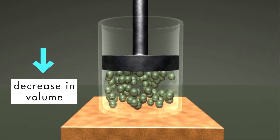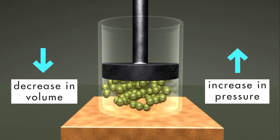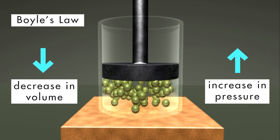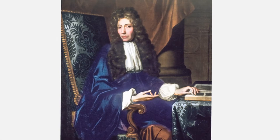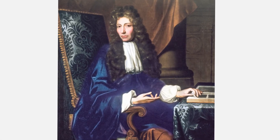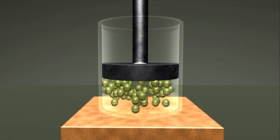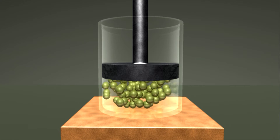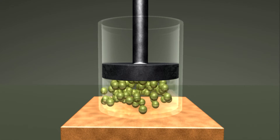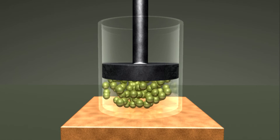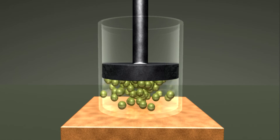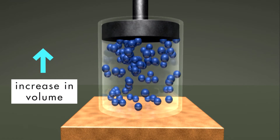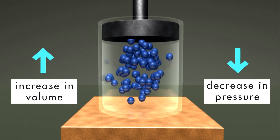A simplified version of one natural law states that a decrease in the volume of a gas produces a proportional increase in the pressure of the gas. This principle, known as Boyle's Law, is named for Robert Boyle, the scientist who first made this discovery in the 1660s. In this illustration, the volume of the gas is being decreased by the plunger. As the volume decreases, the molecules bump into each other more often, which causes the pressure to increase. Likewise, if we increase the volume of the gas, the pressure decreases.